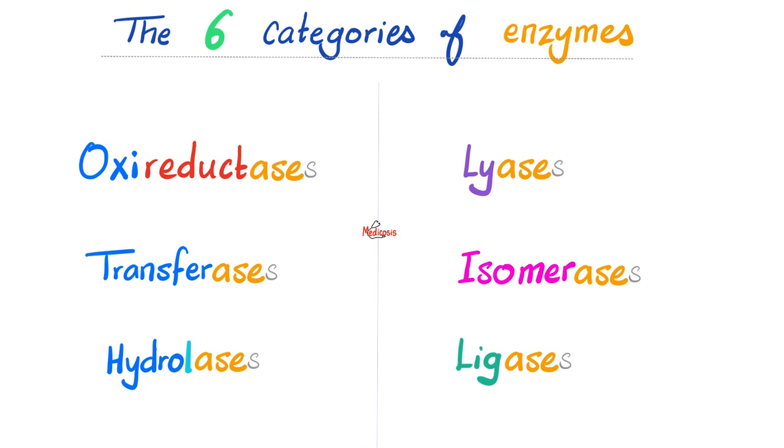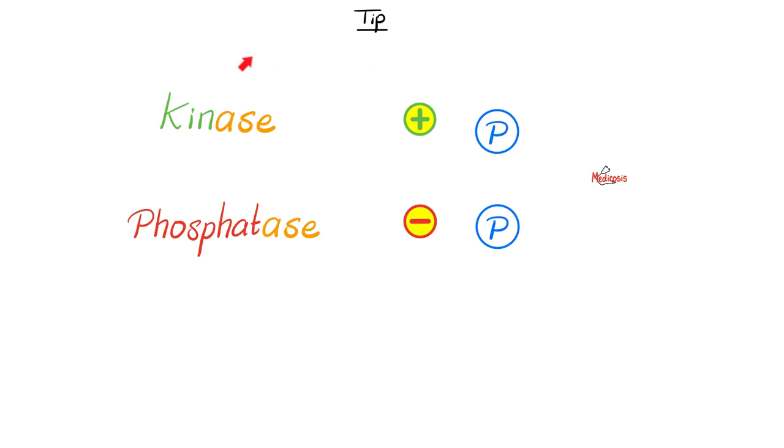Let's talk about six categories of enzymes. We'll talk about oxidoreductases, transferases, hydrolases, lyases, isomerases, and ligases. As you see, all of them end in ase. If you see an ase on your exam, odds are they are talking about an enzyme. Hey Medicosis, does the enzyme have to have ase as a suffix? No, it doesn't have to, but it usually does. And here's a pro tip: when I say kinase, I mean it's gonna add a phosphate. Phosphatase is something to remove the phosphate.